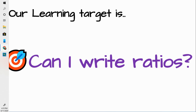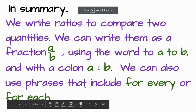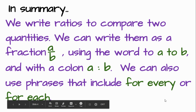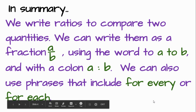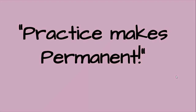Let's put our Digits away for now. Remember our learning target: can I write ratios? In summary, make sure you fill in your summary notes. We write ratios to compare two quantities. We can write them as a fraction A over B, using the word 'to' as A to B, and with a colon as A colon B. We can also use phrases that include 'for every' or 'for each.' Until next time, keep practicing, because practice makes permanence.